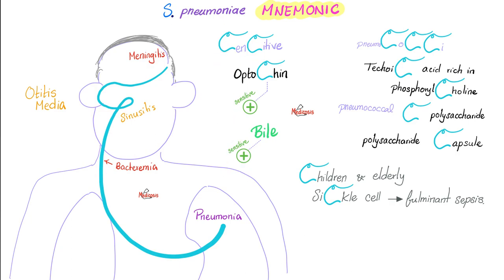Yes, I am soluble in bile. When you do the bile solubility test, you'll find it very soluble and sensitive. What's your most important virulence factor? My polysaccharide capsule. Don't forget the C polysaccharide, which activates C-reactive protein from your liver. I also have teichoic acid and phosphorylcholine — phosphorylcholine is unique to Streptococcus pneumoniae.